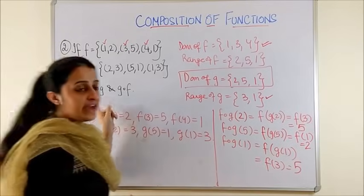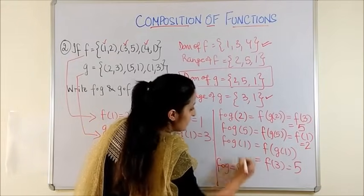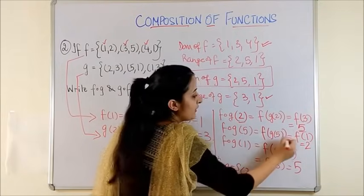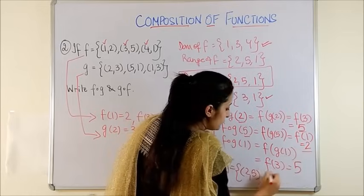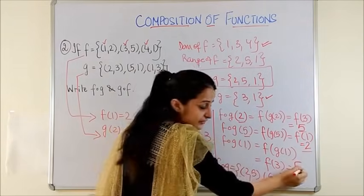So this means my F of G finally gives us these answers. With 2, I have 5. With 5, I get 2. And with 1, we get 5 again.